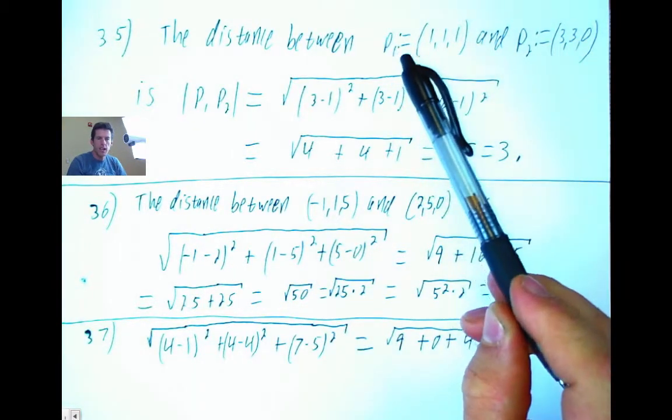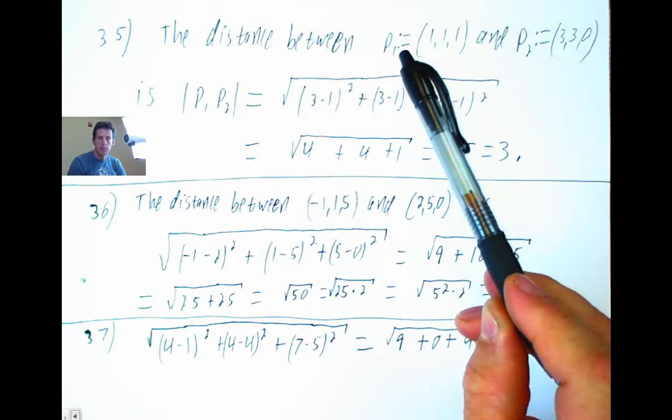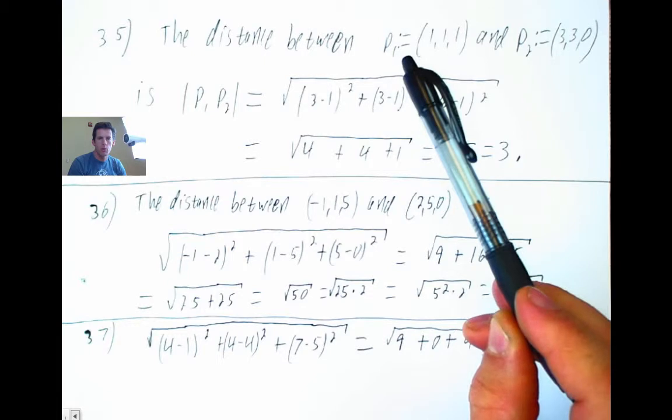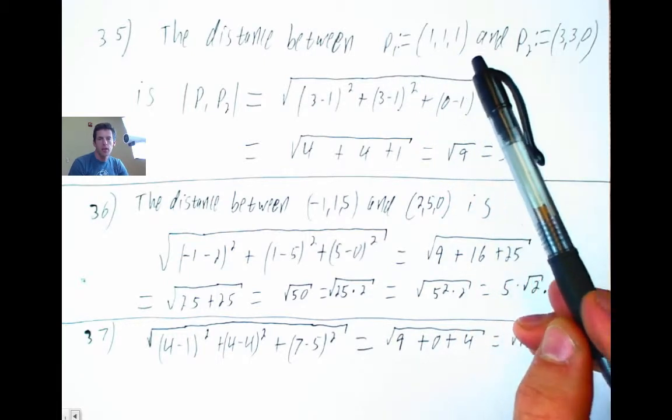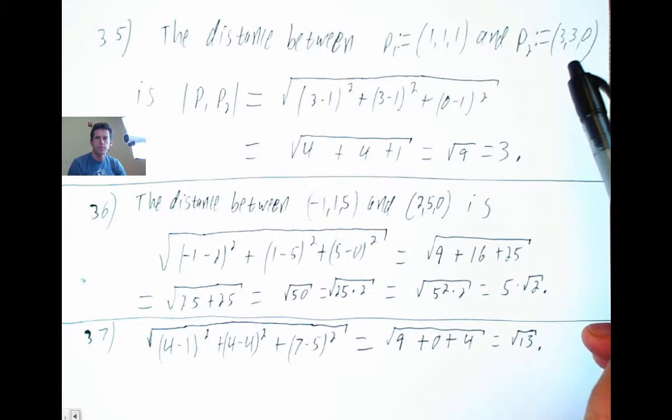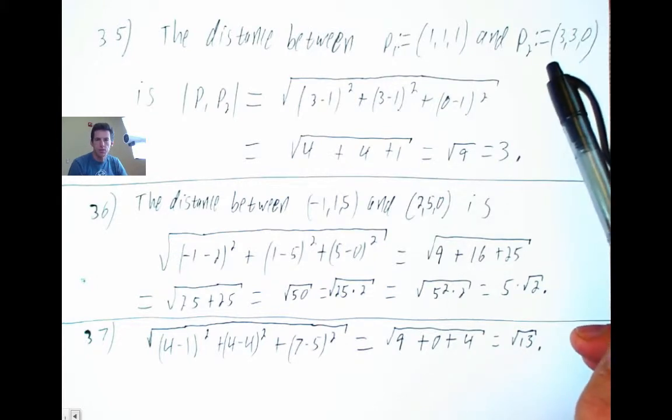The distance between... I like this notation where I say P1 is a point. So P1 is defined by the order triple (1,1,1), and P2 is the order triple (3,3,0). Okay, I can't get used to not writing that equal sign in between like your book does. It just puts the P2 right next to this thing.